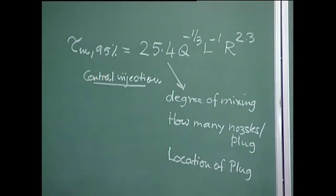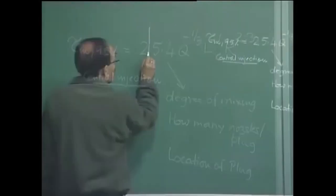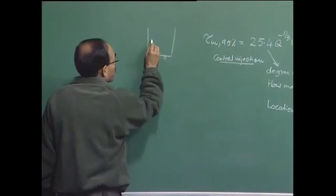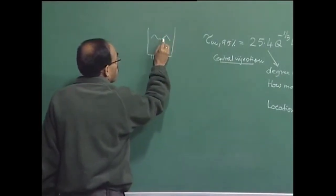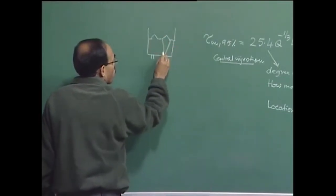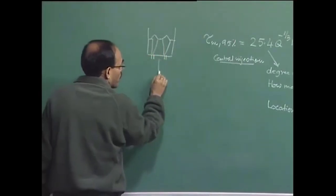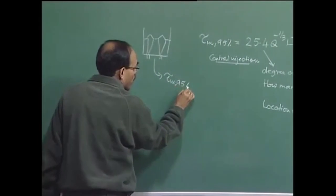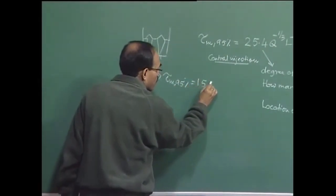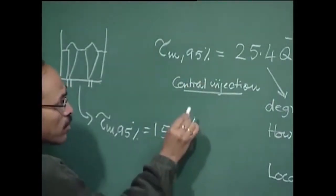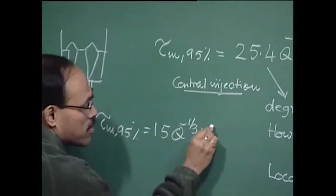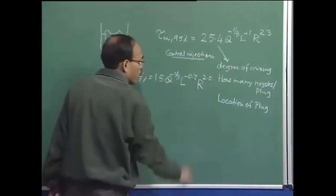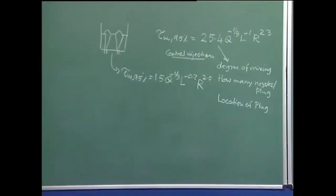When you have, for example, a ladle with two different porous plugs, the correlation for mixing assumes a value which is very similar to the one shown above.